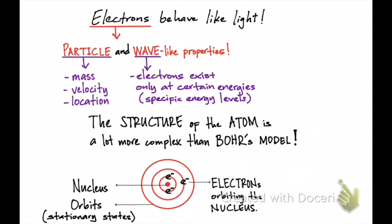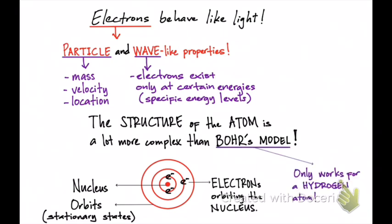This model at the time was already revolutionary because Bohr was able to use it to explain the spectral lines observed in different atoms. But even though Niels Bohr received the Nobel Prize in Physics in the 1920s, this model only works for a hydrogen atom containing a single electron. When you use this model to explain the same phenomenon in multi-electron atoms, it collapses. So physicists and chemists had to come up with a new model, and that's when quantum mechanics was born.